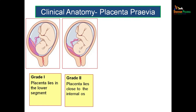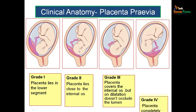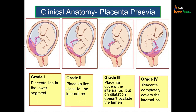There are mainly 4 grades of placenta previa. Grade 1: placenta lies in the lower uterine segment but does not reach the internal os. Grade 2: lying as close as the internal os. Grade 3: covers the internal os but would not occlude it when the cervix is dilated. Grade 4: the placenta completely overlies the internal os and even when the cervix dilates, it remains closed because the placenta is closing it like a lid.